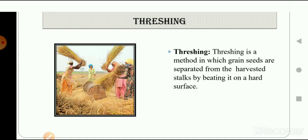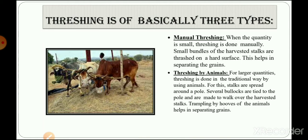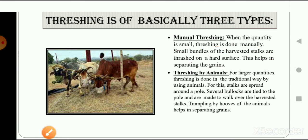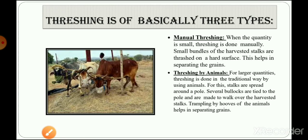Threshing is done in three ways. The first is manual threshing. When the quantity is small, threshing is done manually — bundles of harvested stocks are threshed on a hard surface, which helps in separating the grains. As shown in the picture, the ladies have prepared bundles of harvested stocks and are beating them on a harder surface, helping the grain seeds to get separated from the harvested stock. This is manual threshing, done by humans.